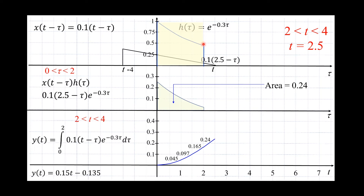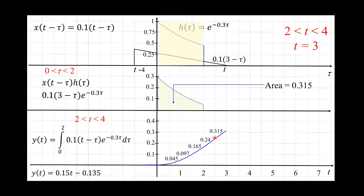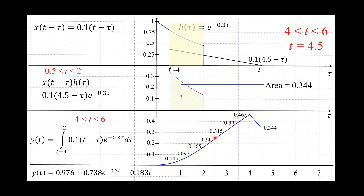Looking at this slide: as long as t is between 2 and 4, the overlap will be between 0 and 2. The output, integrating this, gives this result. Finding the area under this curve and plugging in t=2.5 gives 0.24.